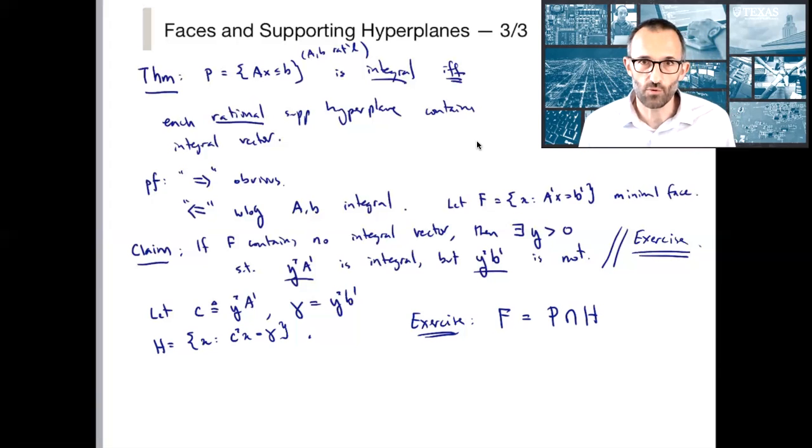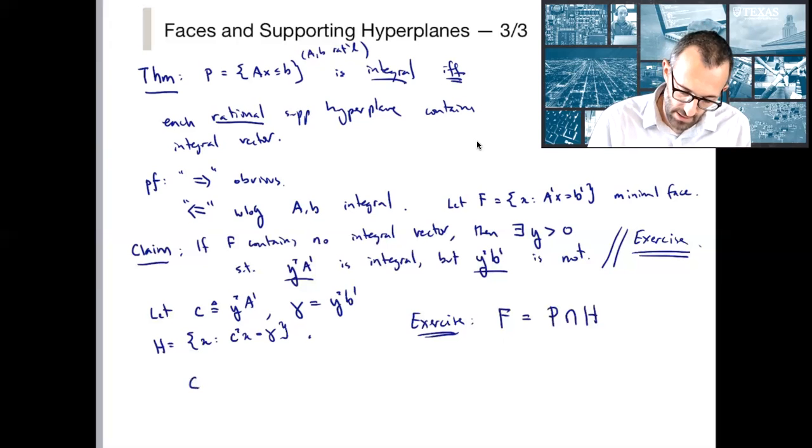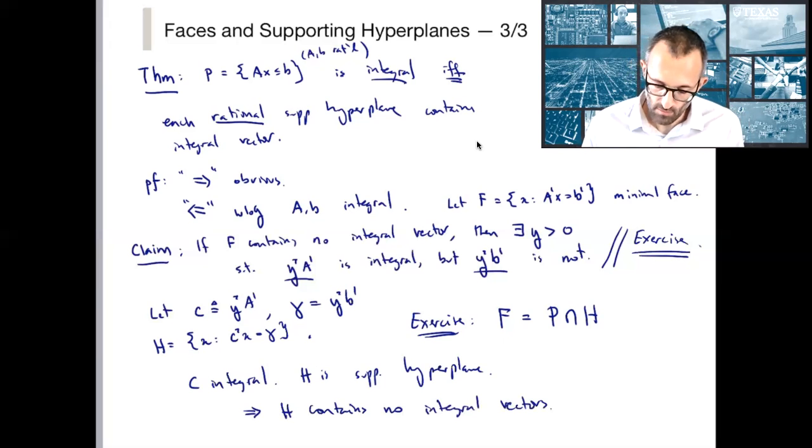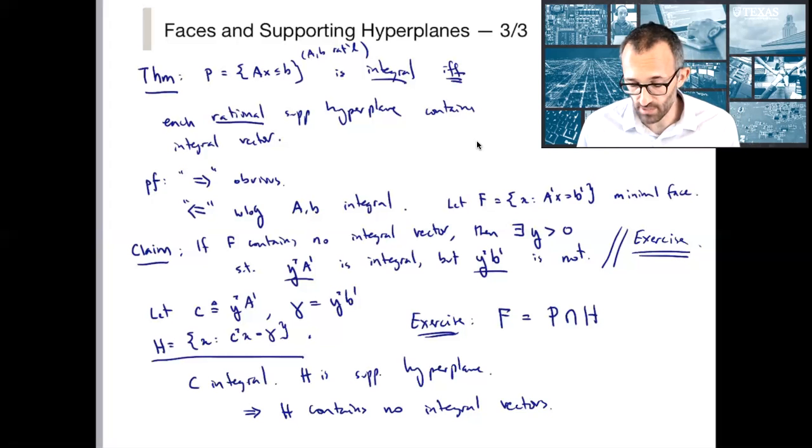But now with this exercise, we're basically done because c is integral and h is a supporting hyperplane. But that means that h contains no integral vectors. Again, why is that? Well, that's an easy part. Just look at the definition of h. h is equal to c transpose x. It's all x such that c transpose x equals gamma. If there's an integral vector x in there, what's c transpose x going to be? c is integral. If x is integral, then c transpose x is integral. But you can't have an integral vector dot product with an integral vector and get gamma, which is non-integral. So that is the contradiction.